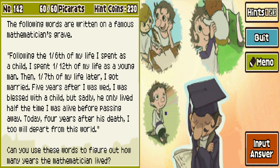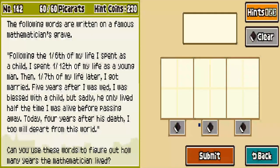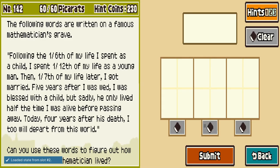42 divided by six is 7, so that makes sense. A twelfth of his life as a young man. There's probably a whole formula to figure this out but I just don't have the mental capacity. I'm just gonna start putting stuff in. Let me just do 50. Let's do 60.